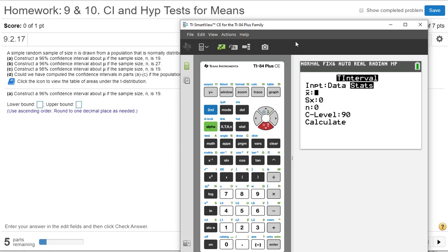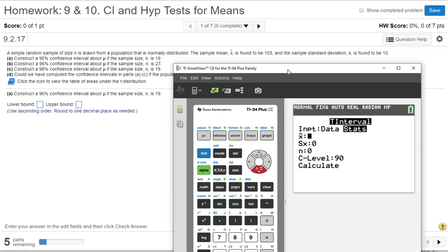So x-bar, it says it's 105. Standard deviation is said to be 10. Now for part A, it says n is 19. And it says we want a 96% confidence interval. Calculate.